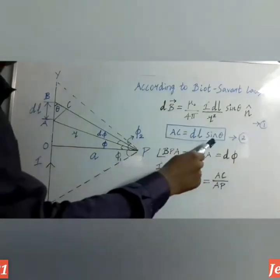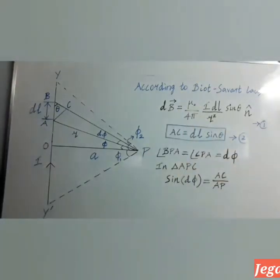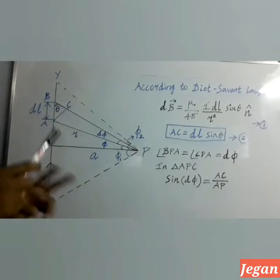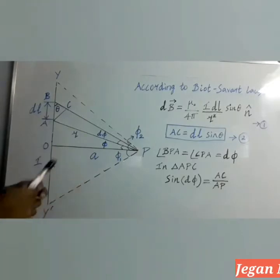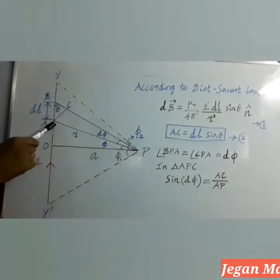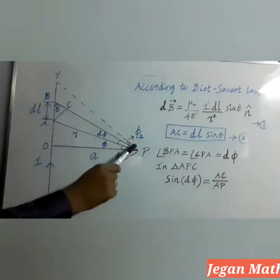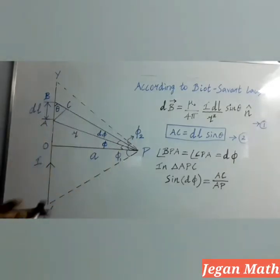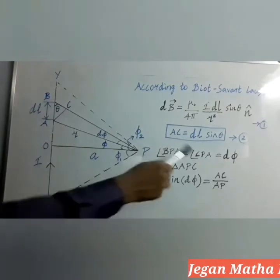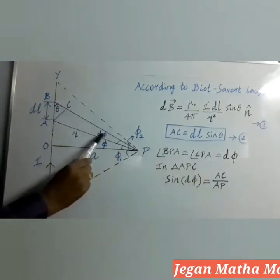Equation 2 is: AC is equal to DL sinθ. Now I am going to take two angles from the diagram — BPA and CPA. Angle BPA is equal to angle CPA; both have the same angle dΦ.